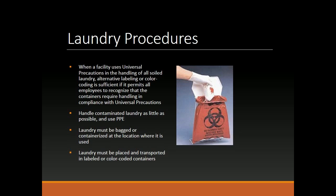Laundry Procedures. When a facility uses universal precautions in the handling of all soiled laundry, alternative labeling or color coding is sufficient if it permits all employees to recognize that the containers require handling in compliance with universal precautions. Handle contaminated laundry as little as possible and use PPE. Laundry must be bagged or containerized at the location where it is used, and must be placed and transported in labeled or color-coded containers.